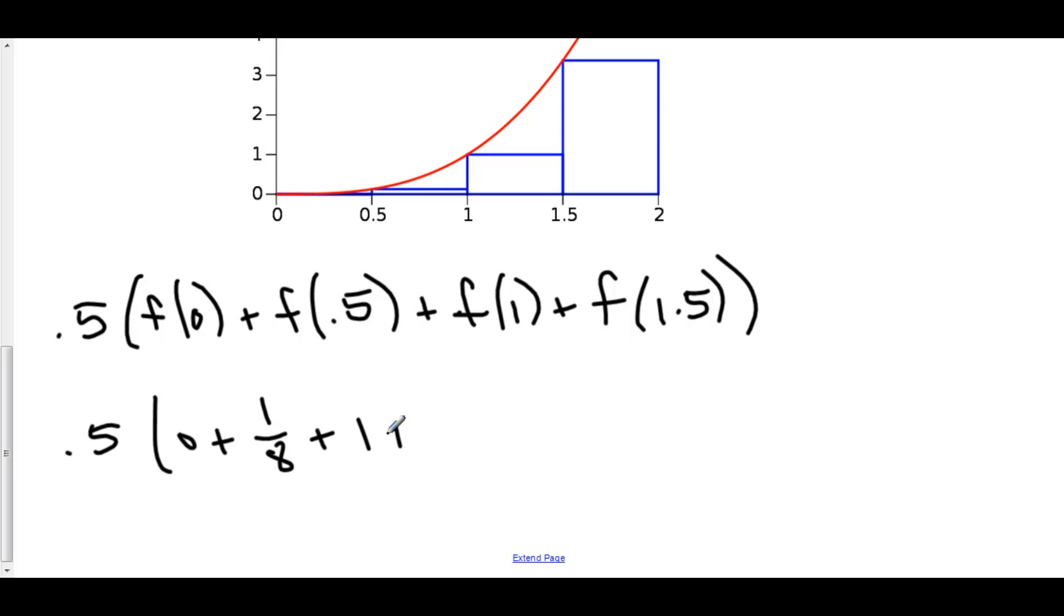And 3 halves cubed is 27 over 8, and when you do all of this out, you get 2.25. And so the approximation for the integral of x cubed from 0 to 2 using LRAM and four partitions is 2.25.